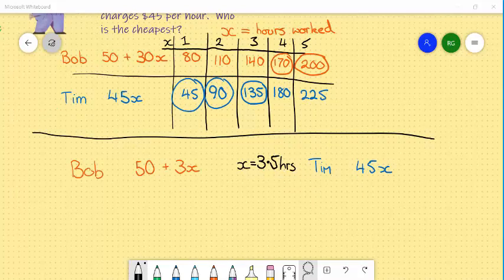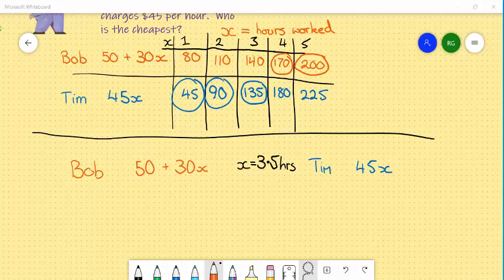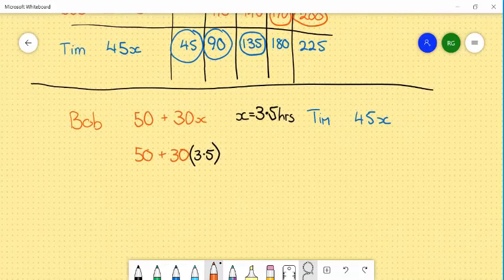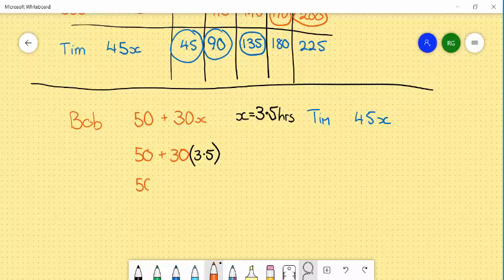I've now redrawn the two equations. And we're going to have to substitute in the value of x, which is 3.5, into both equations to see what the total cost is if they worked for 3.5 hours. So we have 50 plus 30 brackets 3.5. Continuing on from what we learned in previous lessons, we'll have 50 plus 30 multiplied by 3.5, which is 105. Total cost is $155 for Bob.